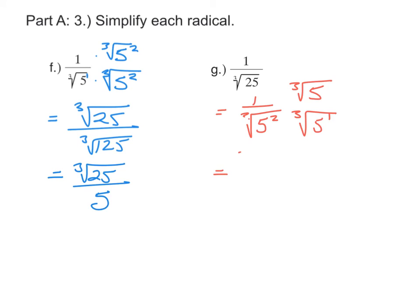So when I multiply this, we'll have the cube root of 5 in the numerator. And in the denominator, it will be cube root of 125, which simplifies, again, to being 5.